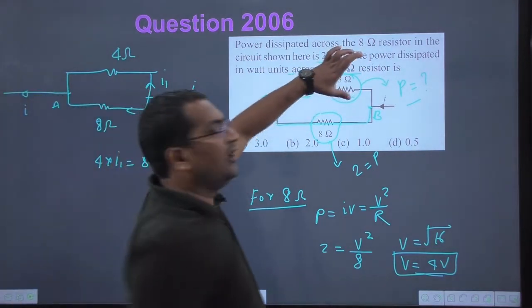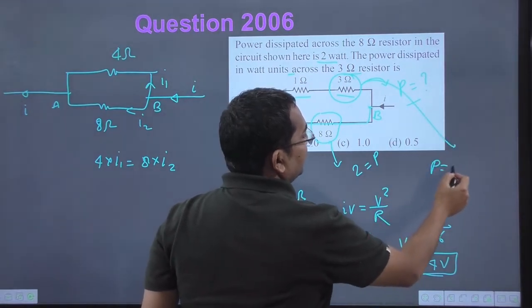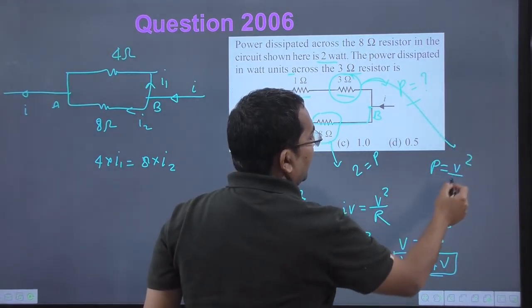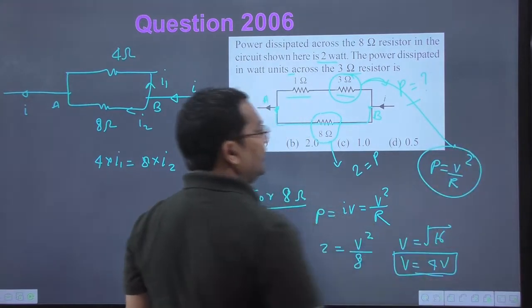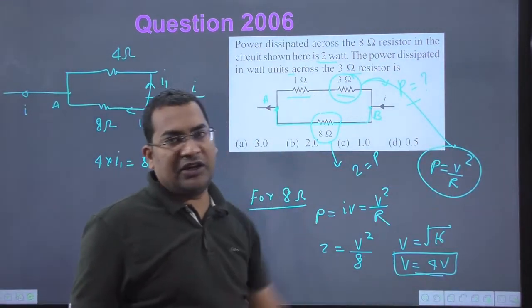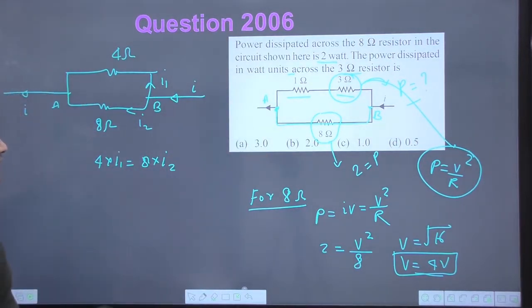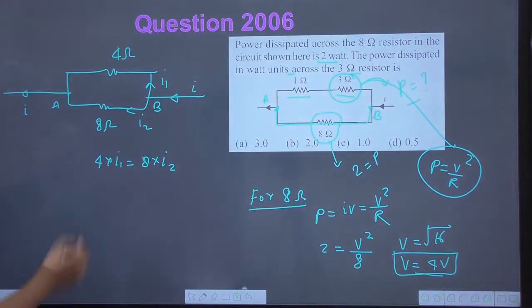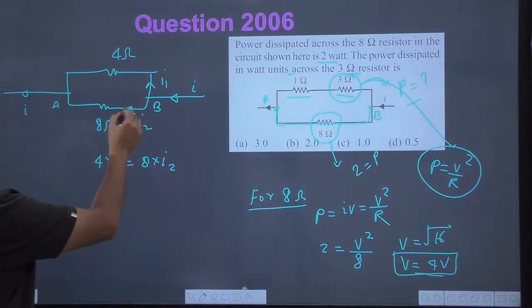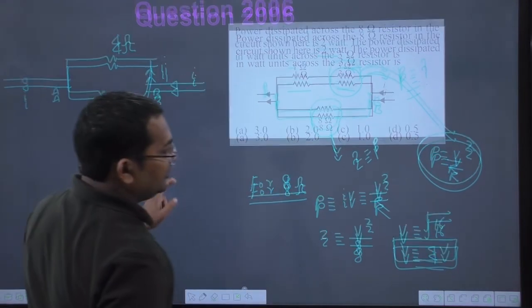Since both branches are parallel, the potential difference across both is equal. So 4 multiplied by I1 must equal 8 multiplied by I2. This equation holds. To find the power in the 3 ohm resistor, I can use power equals V squared over R. But to calculate the potential difference, I need to find the current first.